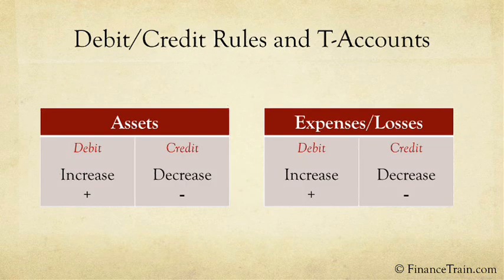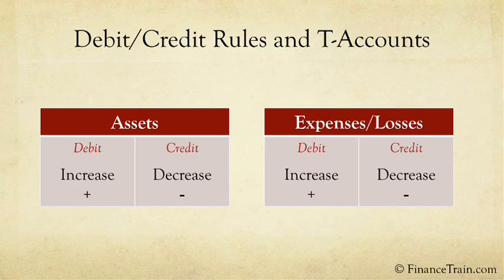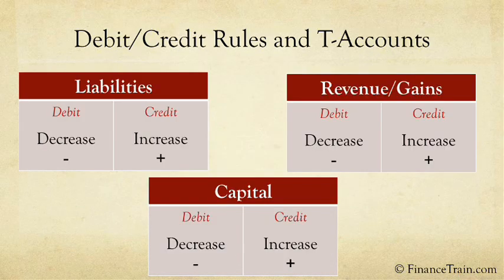These two rules can also be represented on T-accounts as shown on screen. As you can see, for both the asset and expenses or losses accounts, an increase is debited and a decrease is credited.